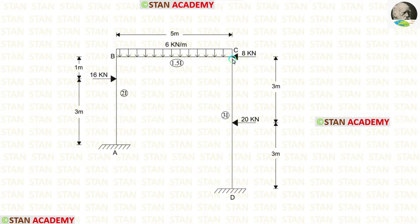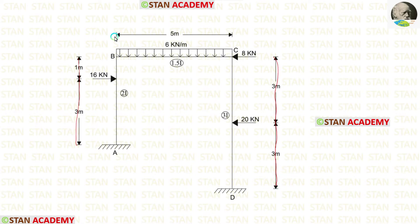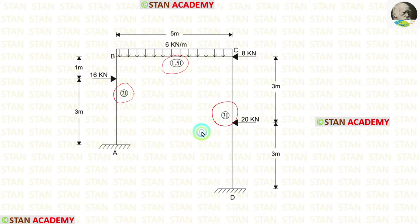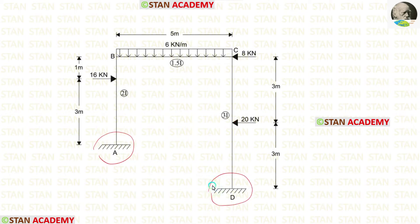At point C there is a nodal point load of 8 kilonewton. The height of column AB is 4 meters, the height of column CD is 6 meters, and the length of beam BC is 5 meters. The moment of inertia for column AB is 2I, for beam BC is 1.5I, and for column CD is 3I. At points A and D there are fixed supports.